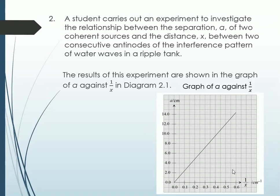This is the SPM question. I don't remember which year already. You can actually open up your past year questions to find for this. So even though you are a Form 4 student looking at this video, it doesn't matter. Even though you do not know what are the physical terms that I'm talking about, but the method on answering a Paper 3 is the same. A student carries out an experiment to investigate the relationship between the separation A of two coherent sources and the distance x between two consecutive antinodes of the interference pattern of the water wave in a ripple tank. This particular sentence tells us that this is the aim of the experiment. The result of this experiment are shown in graph of A against 1 over x in diagram 2.1. So this graph is given to you in the question.